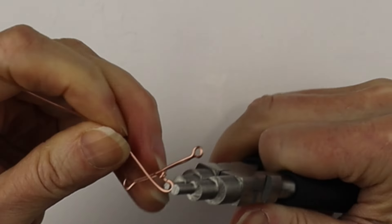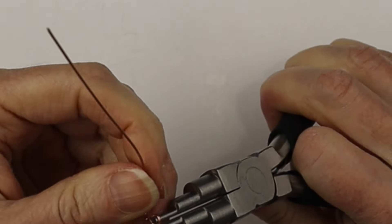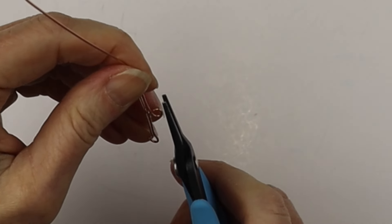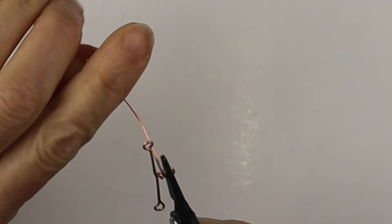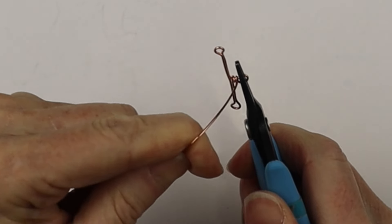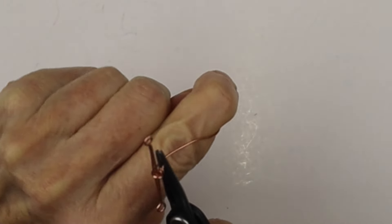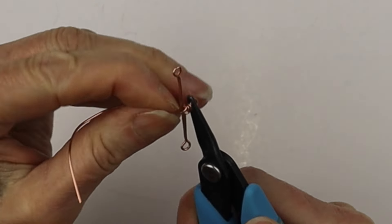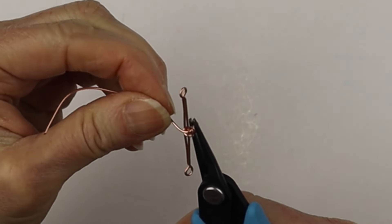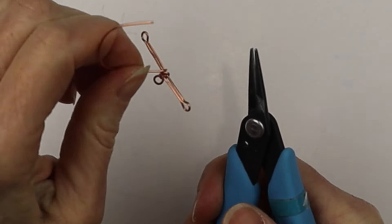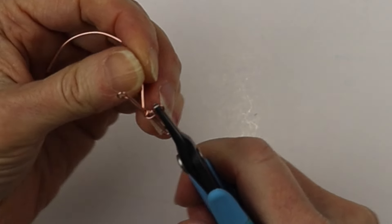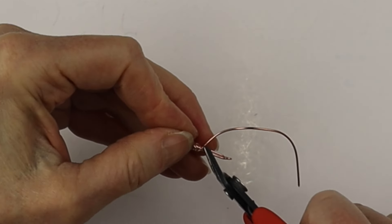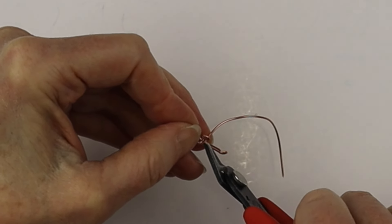And do our loop, so we have the loop there. And then we're going to hold the loop and bring the wire around, full turn around. And then we want to bring it around that bar a couple of times to really secure it in the center so it's nice and secure. Bring it right around and then we're going to clip it.